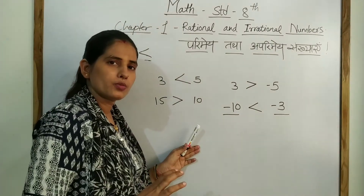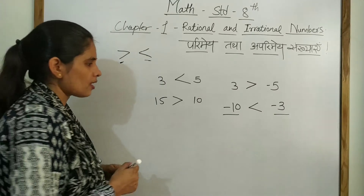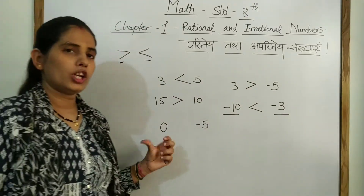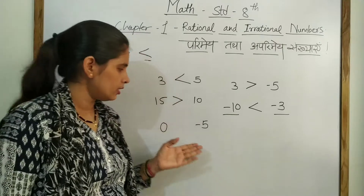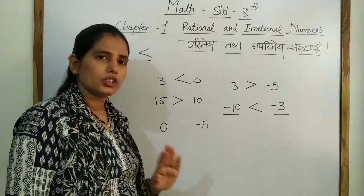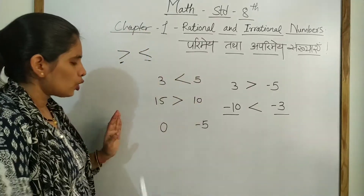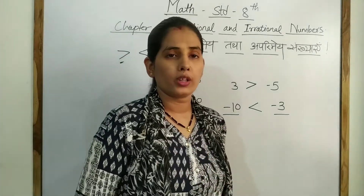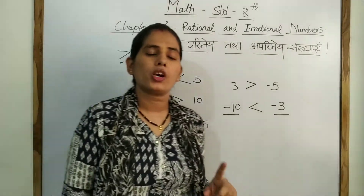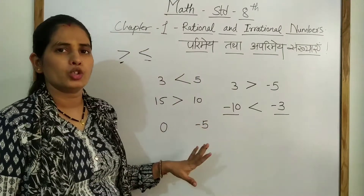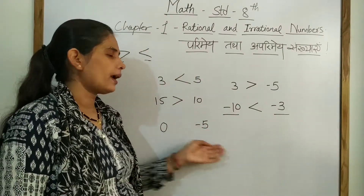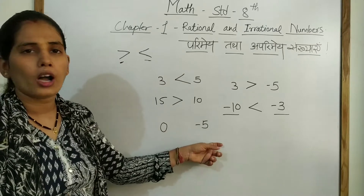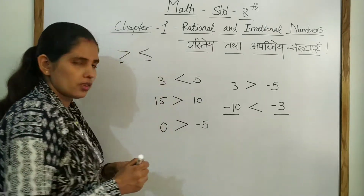Now here is 0 and here is minus 5. Zero is neither positive nor negative. You should keep one thing in mind: 0 is always bigger than any negative number. So the sign points toward minus 5, meaning 0 is greater than minus 5.